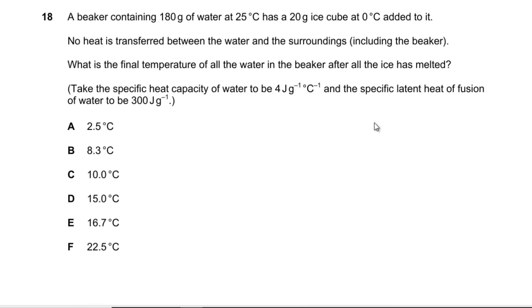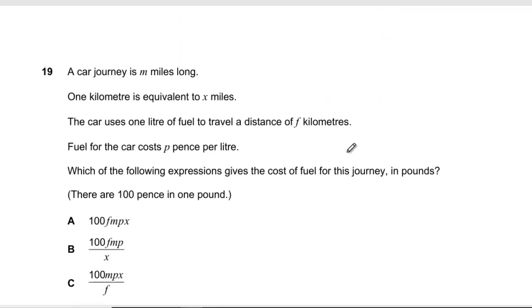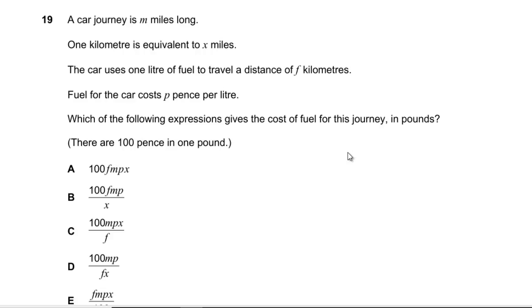Question 18: Beaker containing 180 grams of water has a 20 gram ice cube put in. No heat is transferred to the surroundings. What's the final temperature? We've started off with 180 times 25 times 4, so that's 18,000 joules from zero. To melt that ice is going to take 20 times 300, so that's 6,000. We've got 12,000 left to take 200 grams up in temperature. Divide by 200 to get 60, then divide by 4 to get a 15 degree C change, which is D.